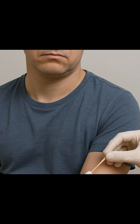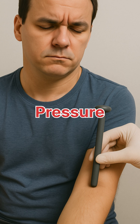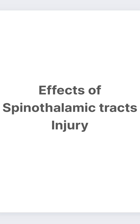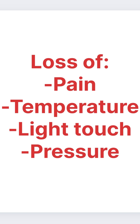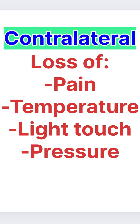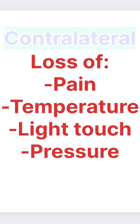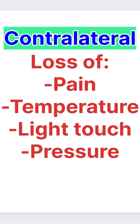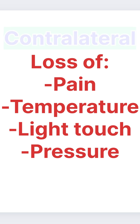The anterior spinothalamic tract is also responsible to feel the pressure on skin produced by a blunt object. In case of spinothalamic tract injuries, there are loss of pain, temperature, light touch, and pressure sensations. These losses are all contralateral, as the second order neurons decussate in the spinal cord before they ascend as spinothalamic tracts.